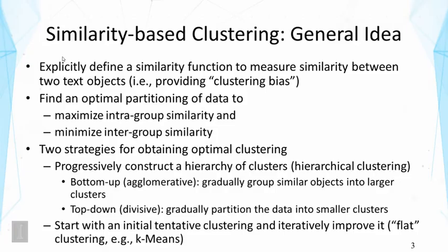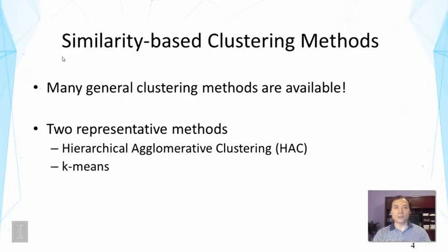The other general strategy is to start with an initial tentative clustering and iteratively improve it, which often leads to flat clustering. One example is k-means. So in this course we're going to talk about two representative methods in some detail: one is hierarchical agglomerative clustering, or HAC, and the other is k-means.